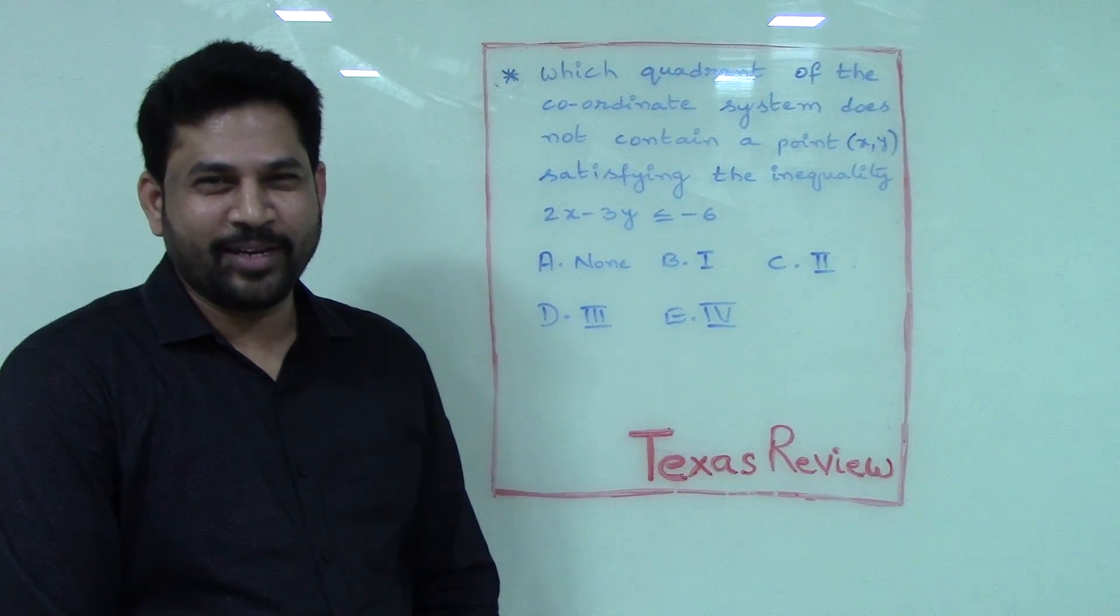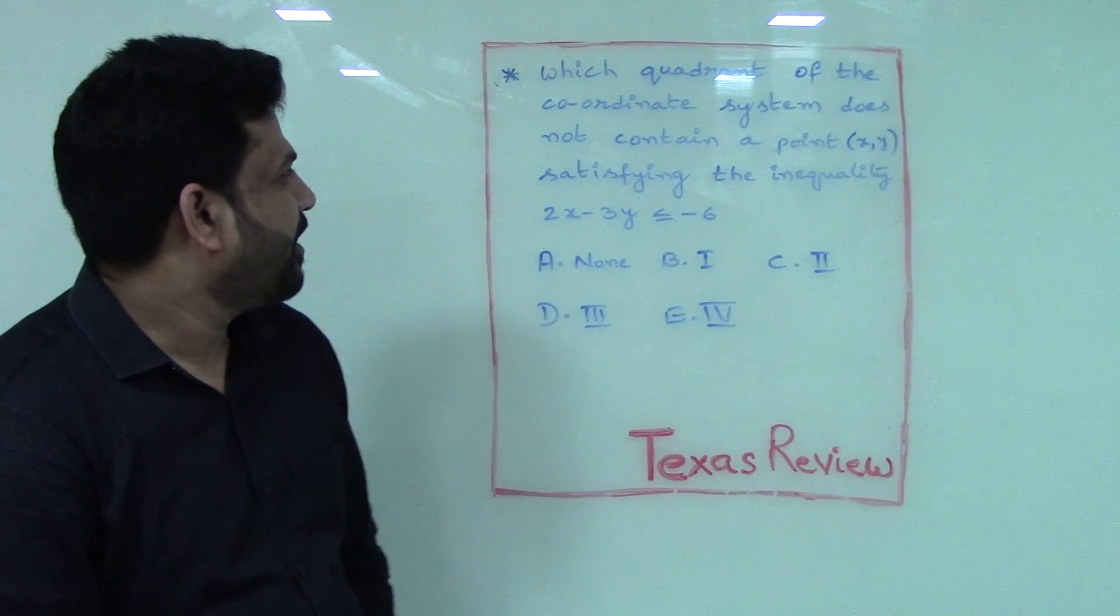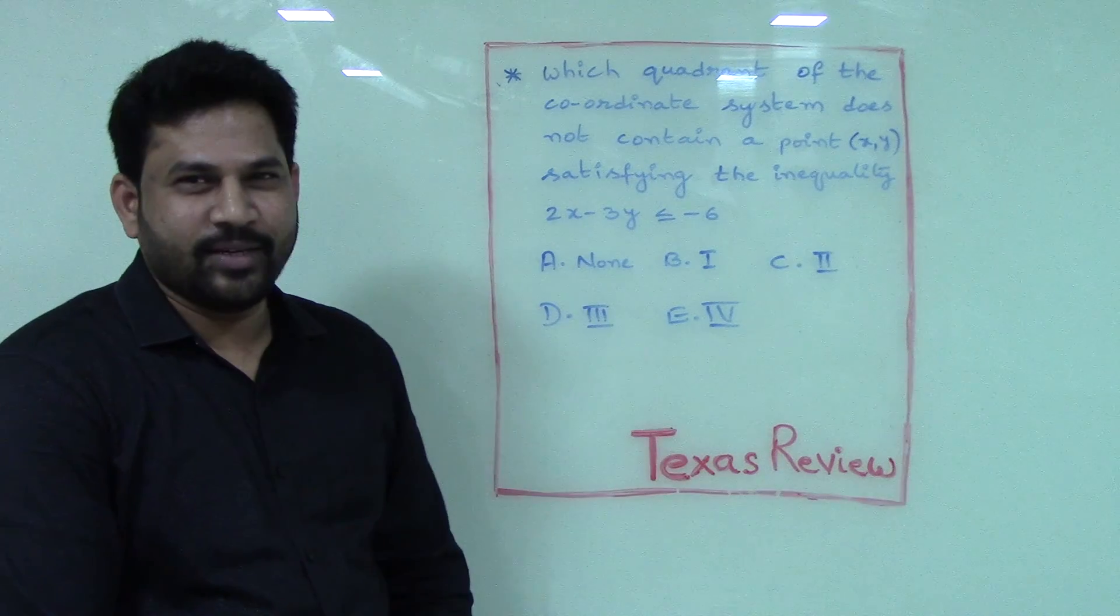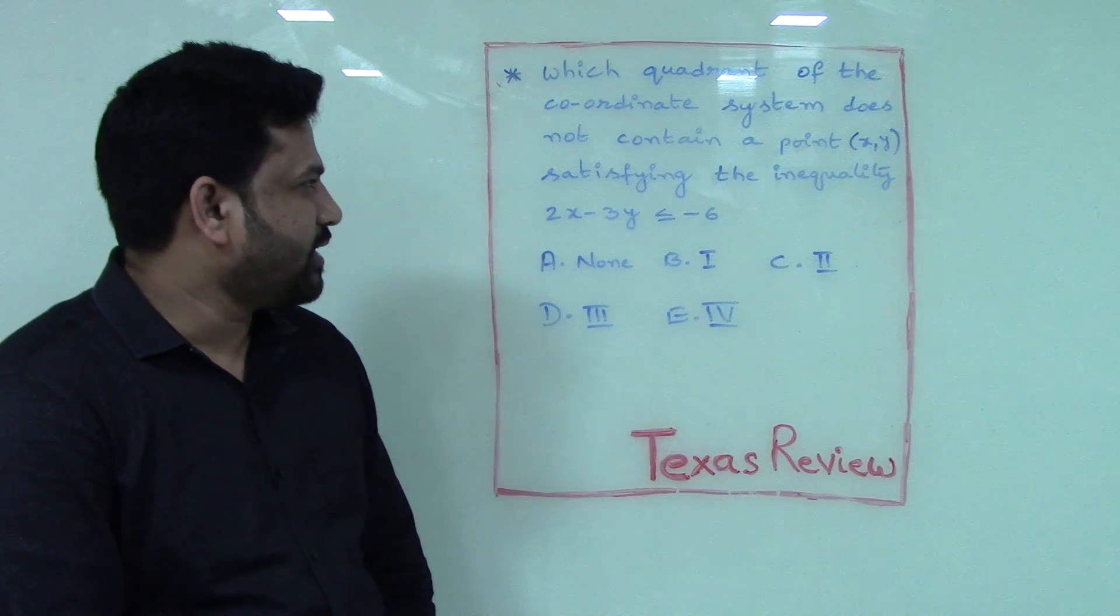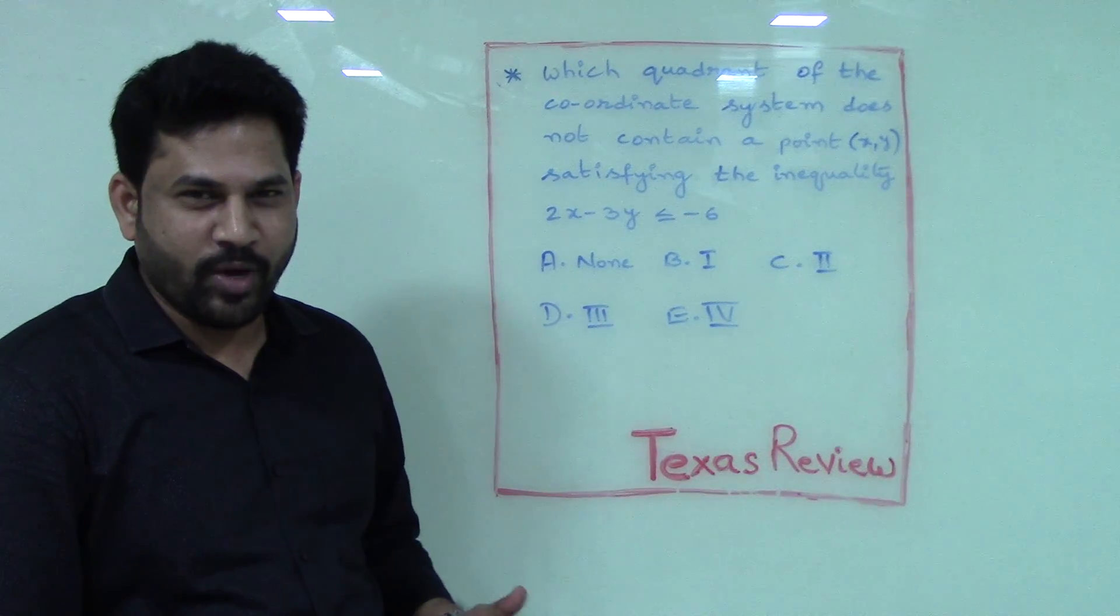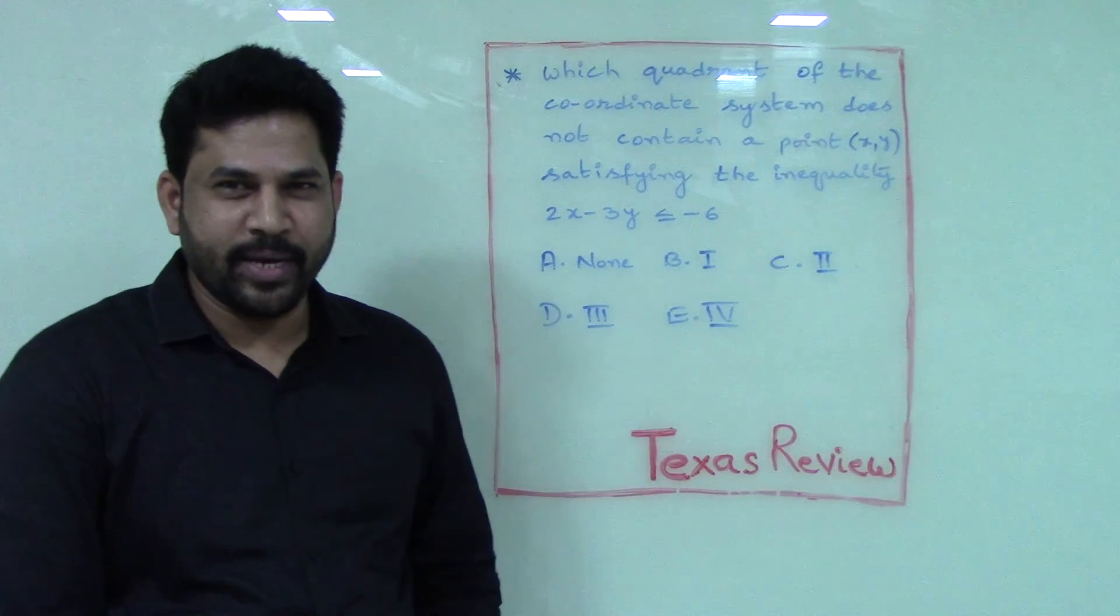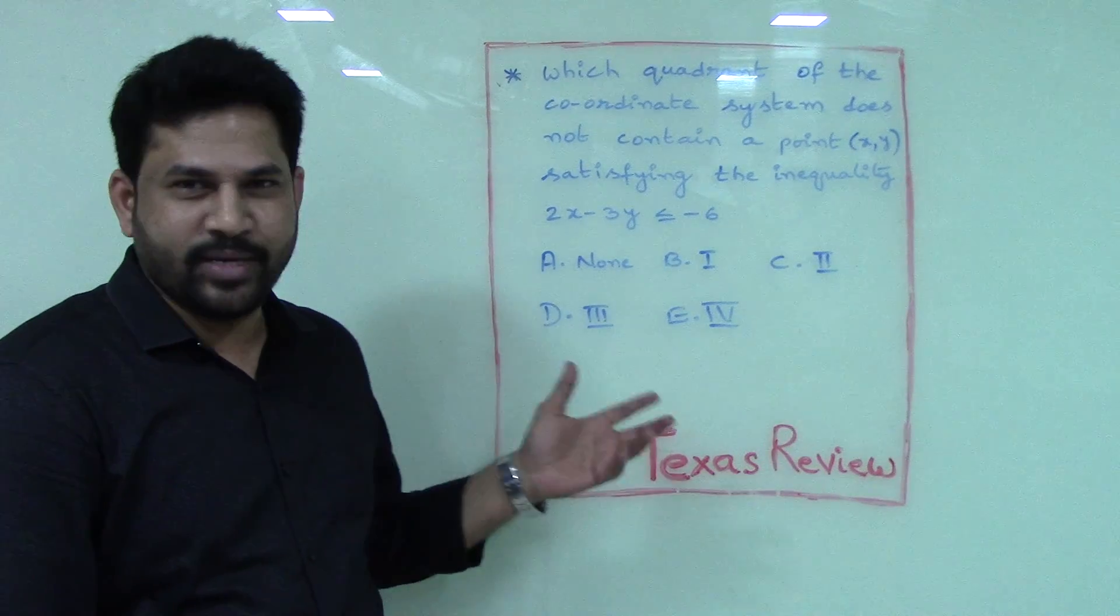Hi, welcome to question of the day. Which quadrant of the coordinate system does not contain a point (x,y) satisfying the inequality 2x minus 3y less than or equal to minus 6?